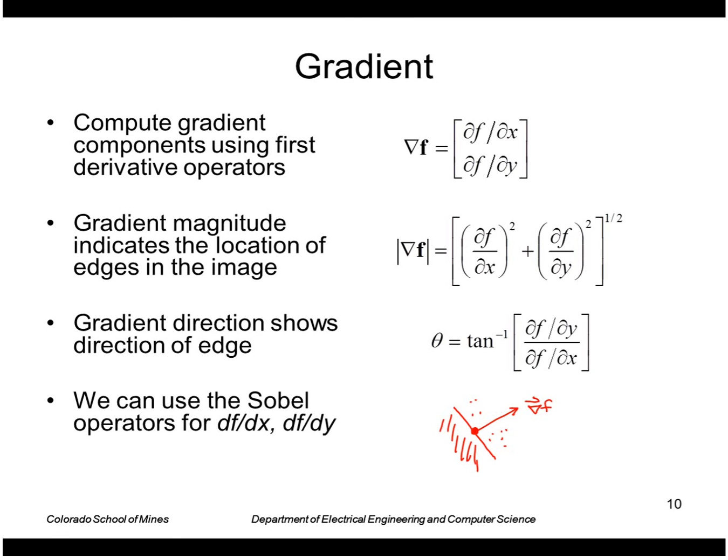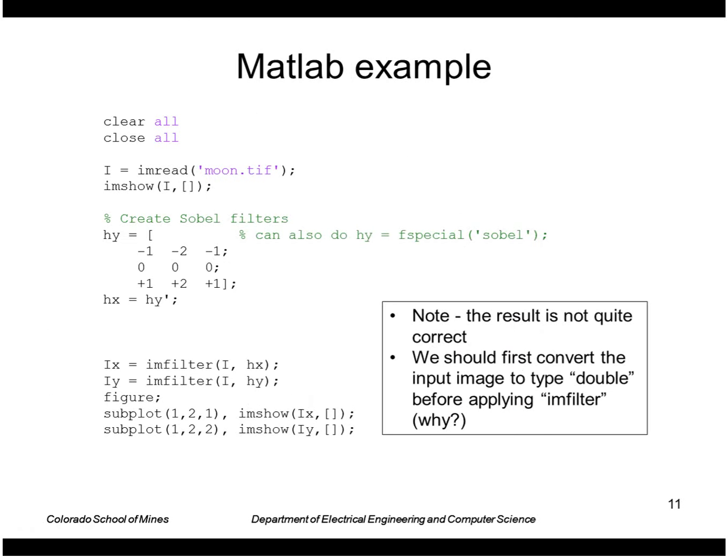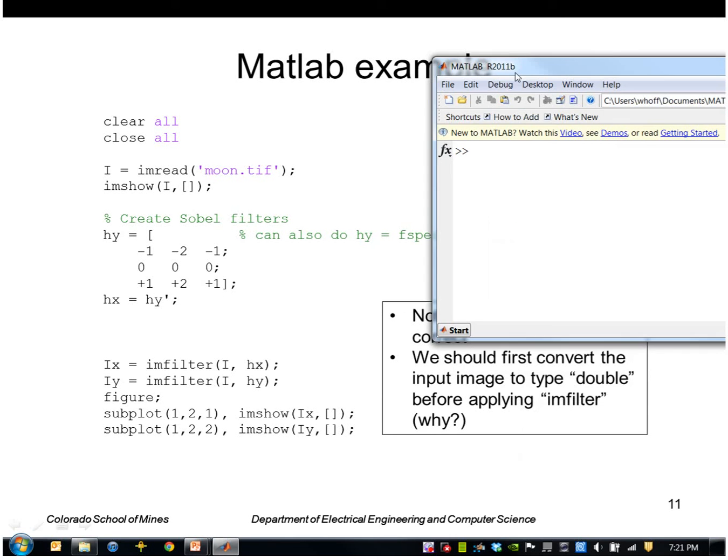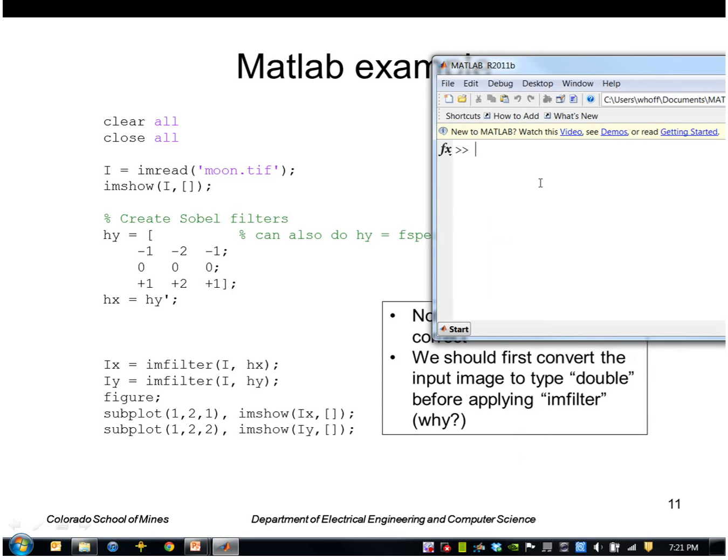For these x and y derivatives we can use the Sobel operators to approximate the derivative. Let's take an example in MATLAB. This image, the moon, is kind of like a circle.